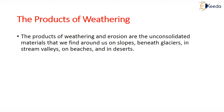The products of weathering and erosion are unconsolidated materials found around Earth — on slopes, beneath glaciers, in stream valleys, on beaches, and in deserts. After weathering, small silty and sandy-like structures accumulate. The nature of these materials differs in composition, size, degree of sorting, and degree of rounding, which is mainly determined by the type of rock being weathered — that is, it is dependent upon the parent rock.